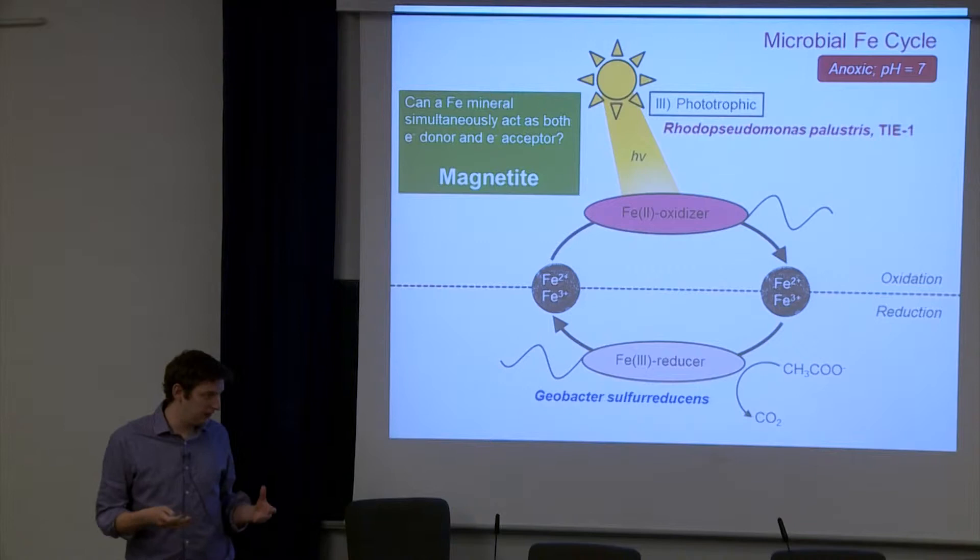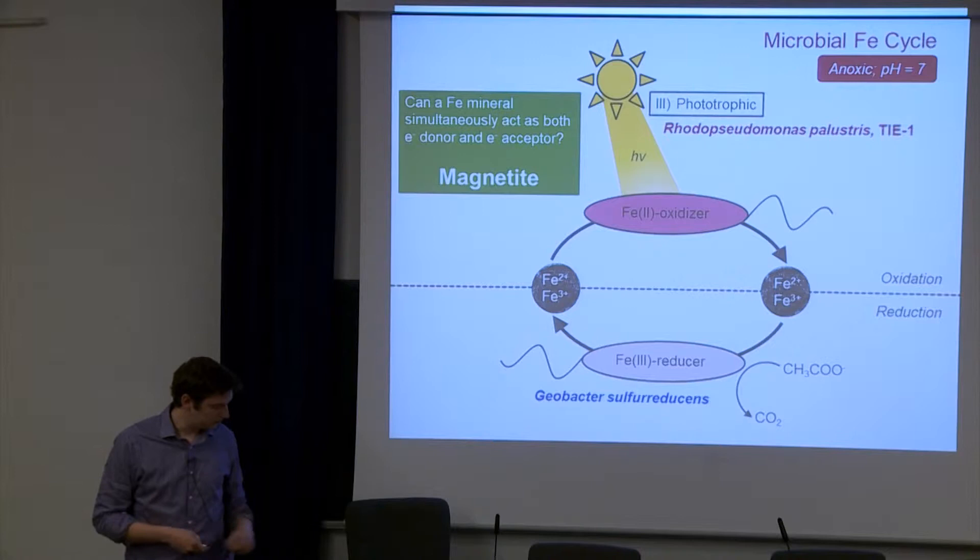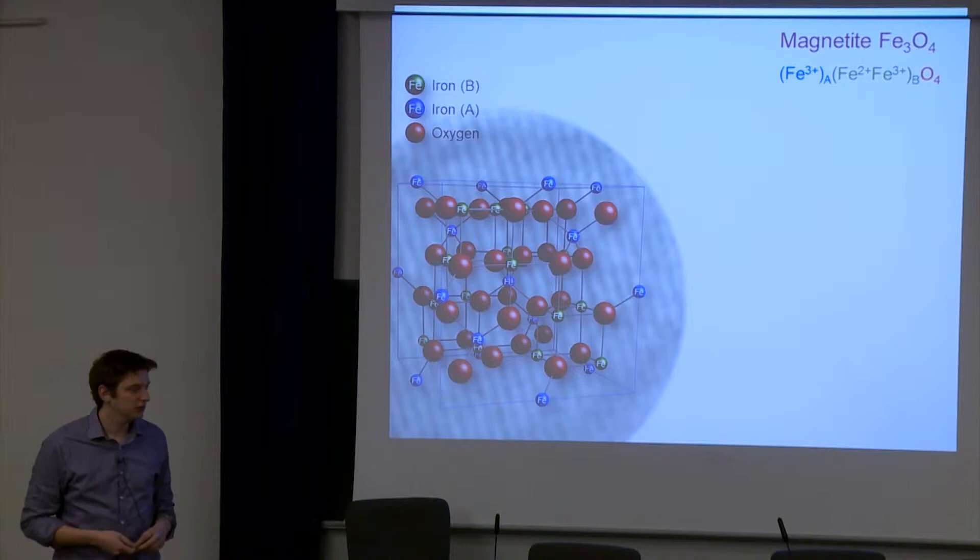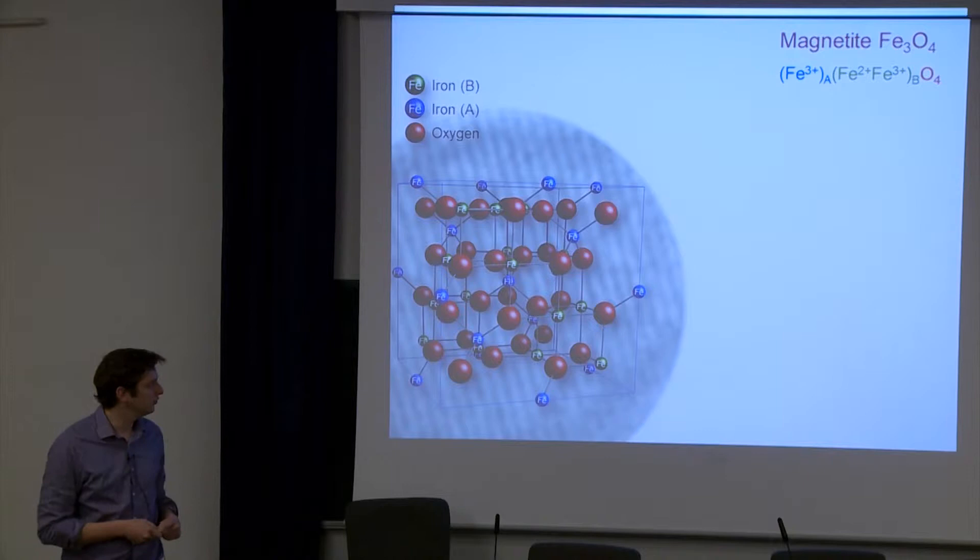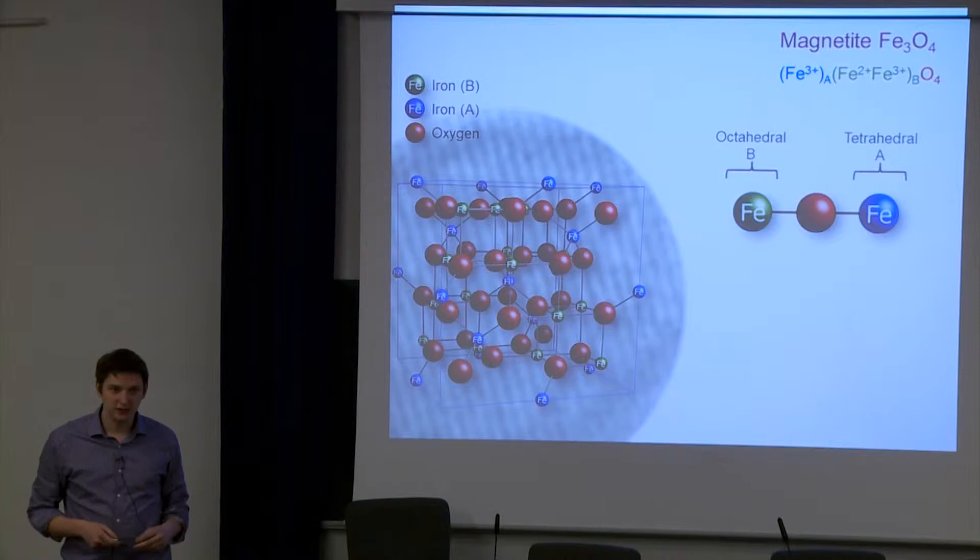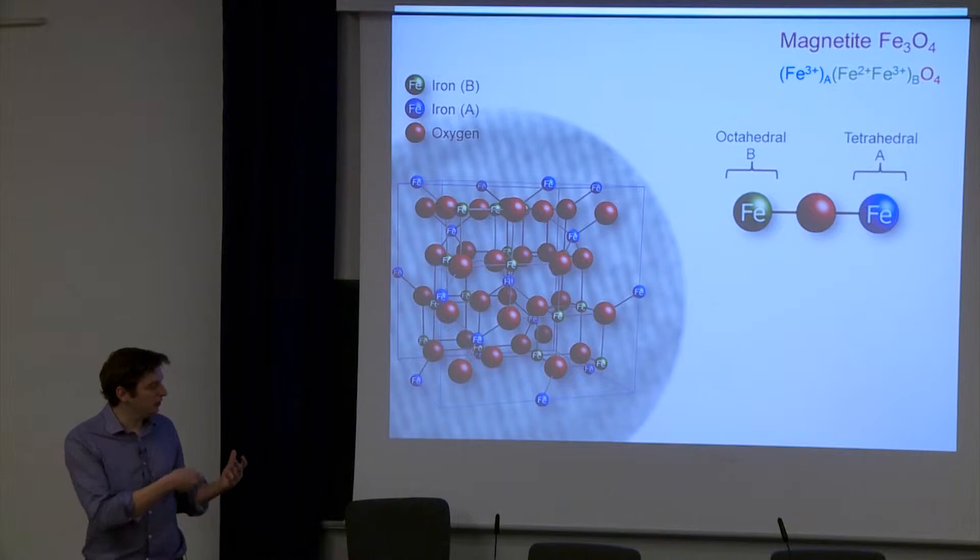So magnetite itself, for those not familiar, has a very nice structure. It contains iron in octahedral and tetrahedral coordination. This gives rise to its magnetism, because iron atoms are very magnetic and the different lattice sites couple with each other in anti-parallel magnetization directions. You can think of like a north and south pole. These up arrows represent the direction of magnetization.